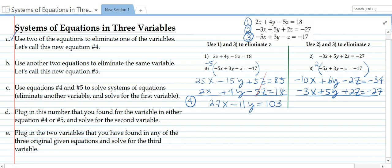Once again when we add these the z's will cancel. So we get negative 13x plus 11y equals negative 61. We will number this equation number 5. We're done with step B.